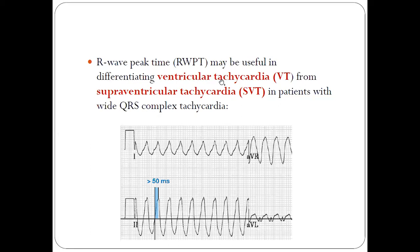R-wave peak time may be useful in differentiating ventricular tachycardia from supraventricular tachycardia in patients with wide QRS complex tachycardia. If the R wave peak time is more than 50 milliseconds, it goes more in favor of VT, and if it is less than 50 milliseconds, it favors supraventricular tachycardia.